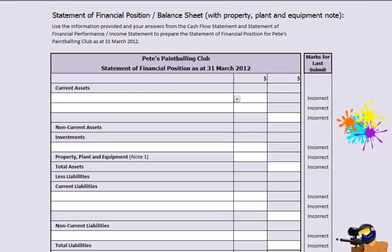This time, sort the few remaining transactions on the task 1 page into assets or liabilities. If you want, you may choose to sort them into current and non-current assets and current and non-current liabilities.